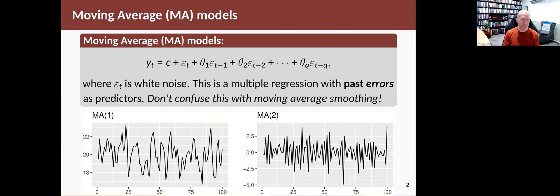You've seen autoregressive models where you take a regression against past observed values. In a moving average model, it's a little bit like a regression, but it's against past errors rather than past observed values.